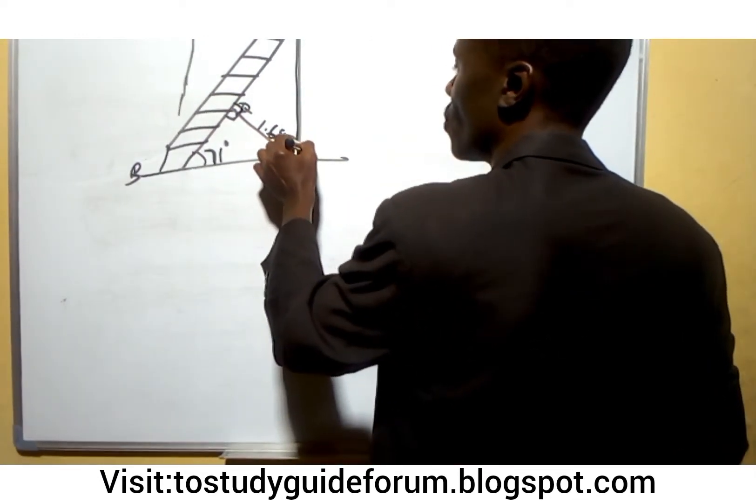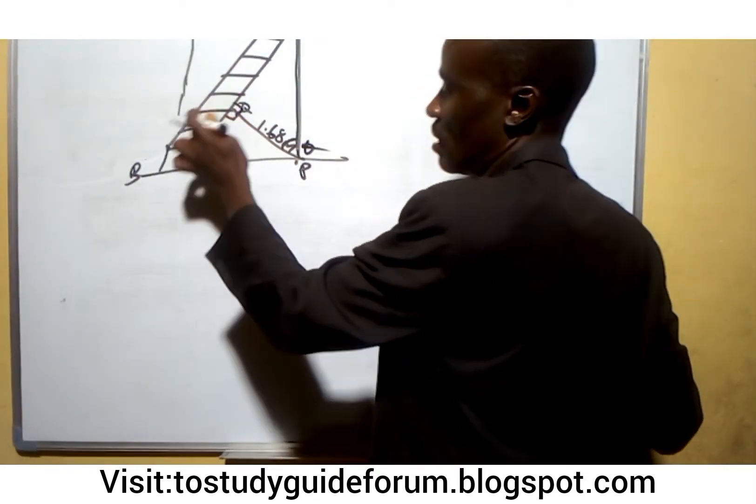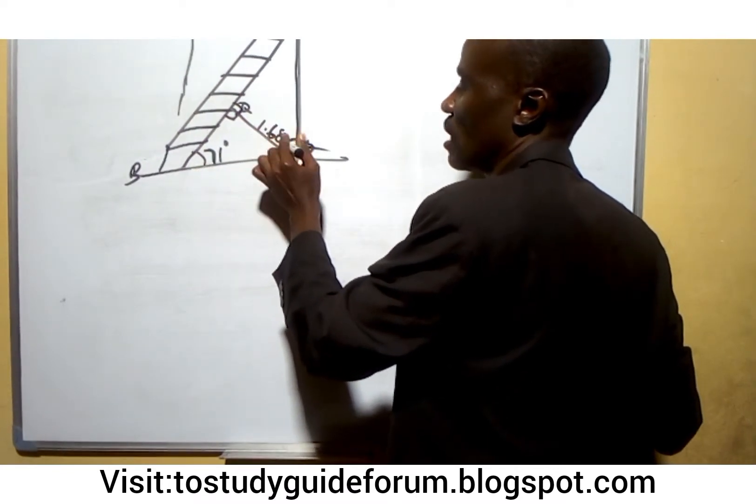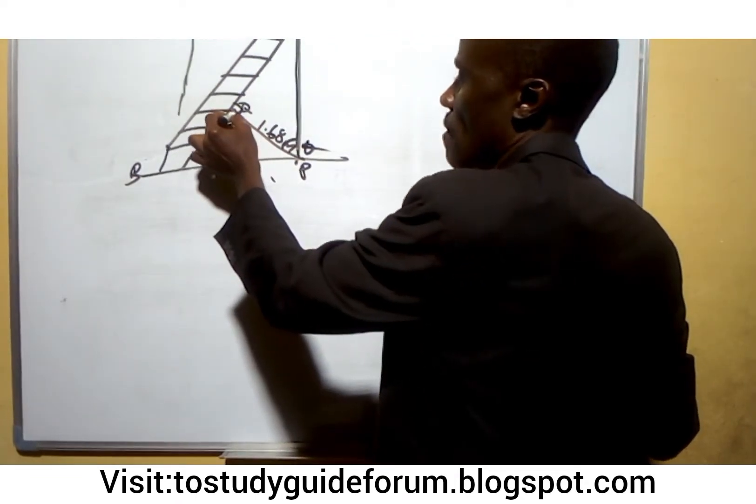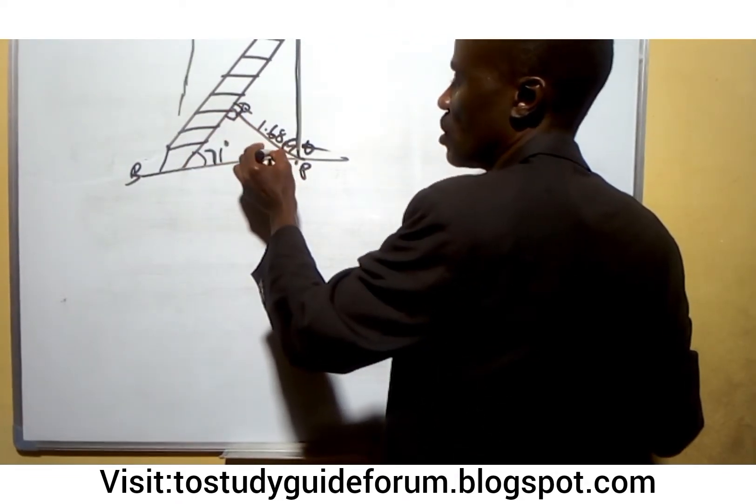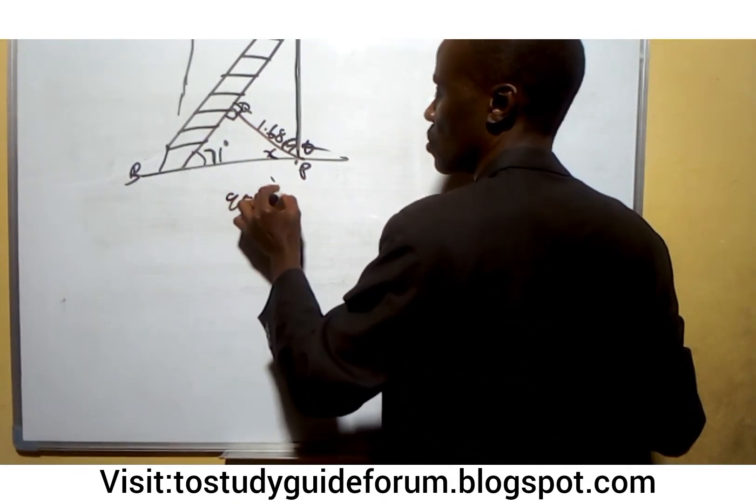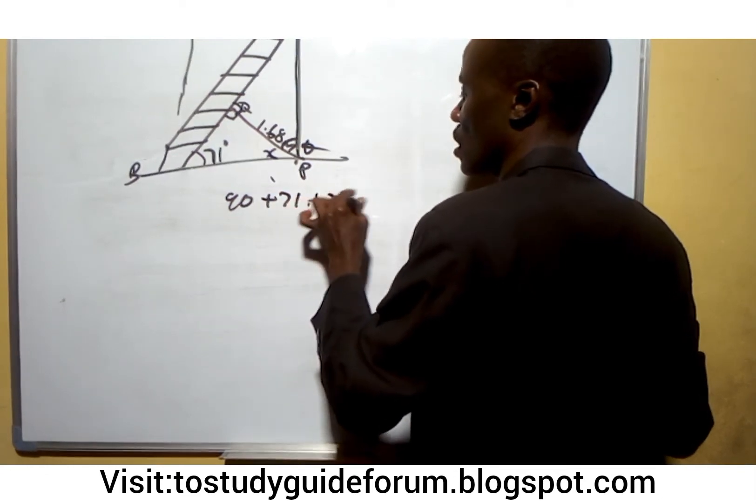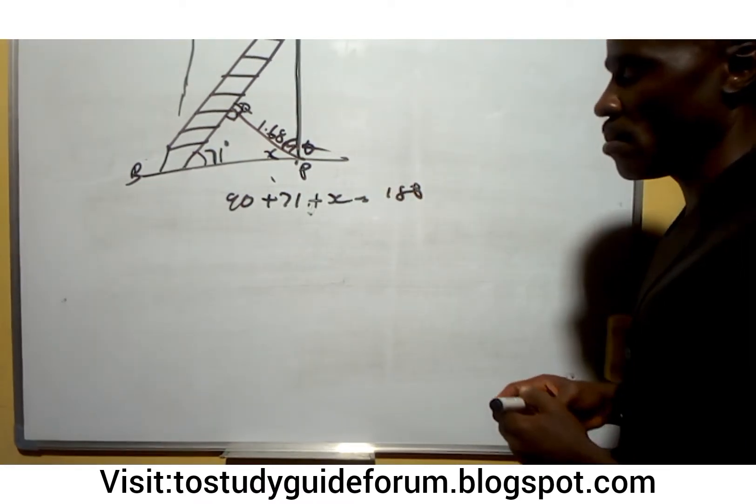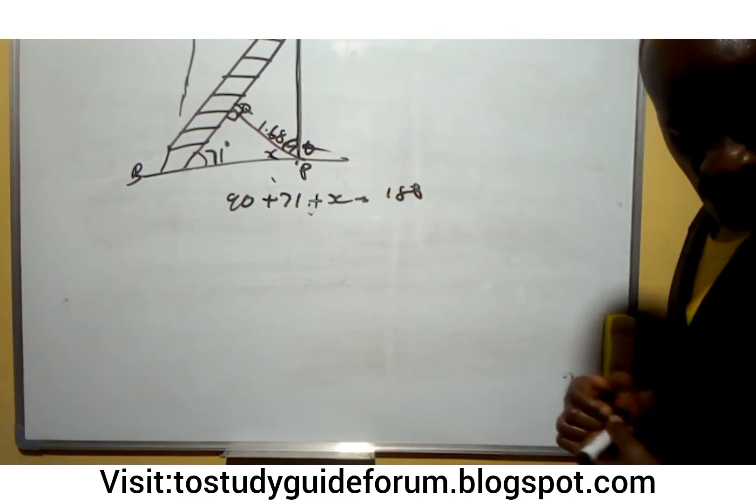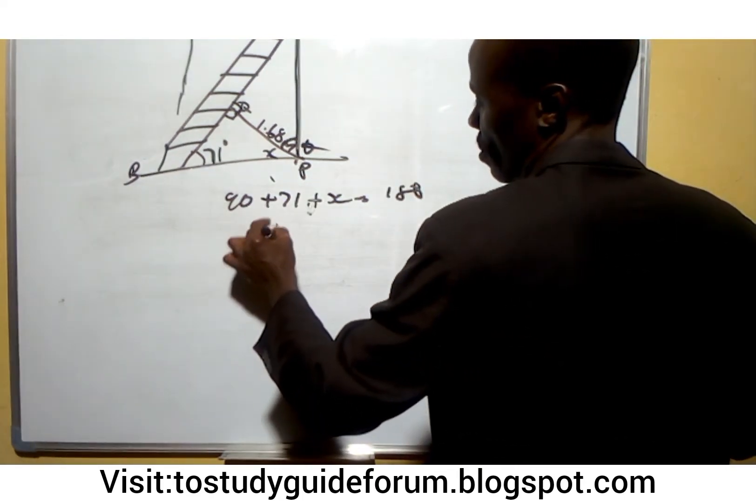We need to find this angle. We know that this one is 90, here it says 71, and we know that this joint together forms a right angle. So in other words, whatever we have here, let's say that this place is X. What it means is that 90 plus 71 plus X will give us 180.